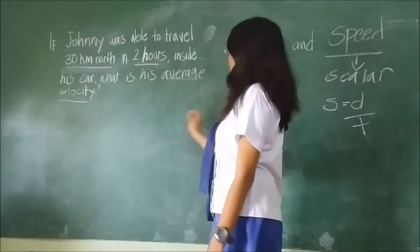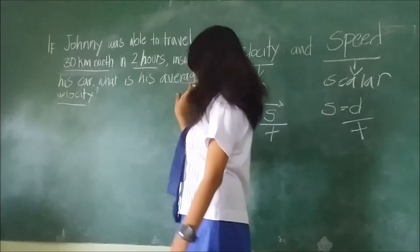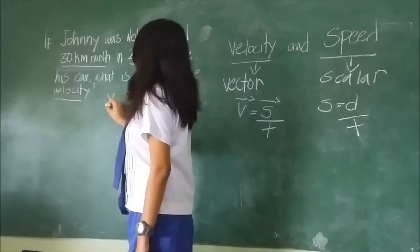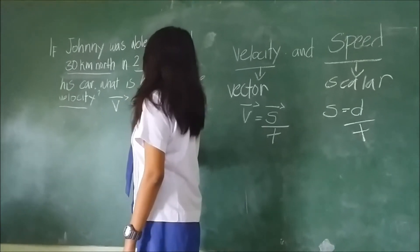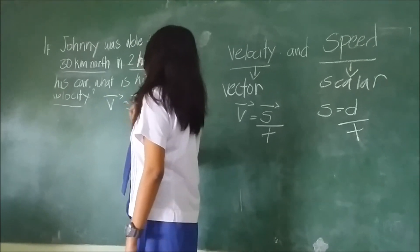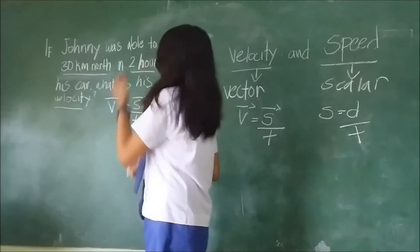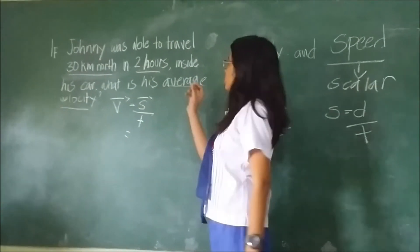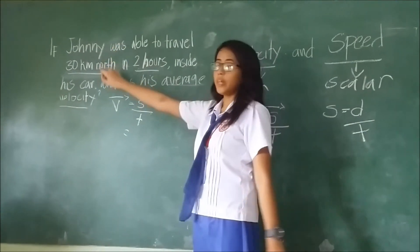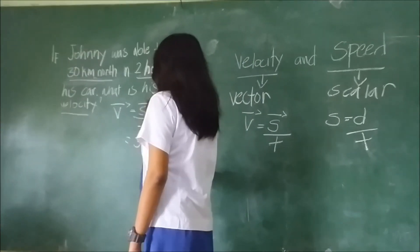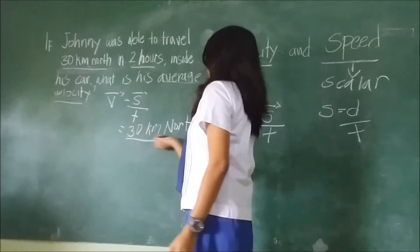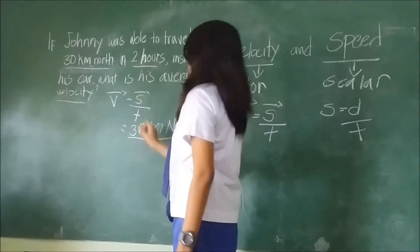Here, we need to find the average velocity. The formula we will use is V is equals to S or displacement over time. In this situation, Johnny displaced 30 kilometers north. He was able to do it in 2 hours.